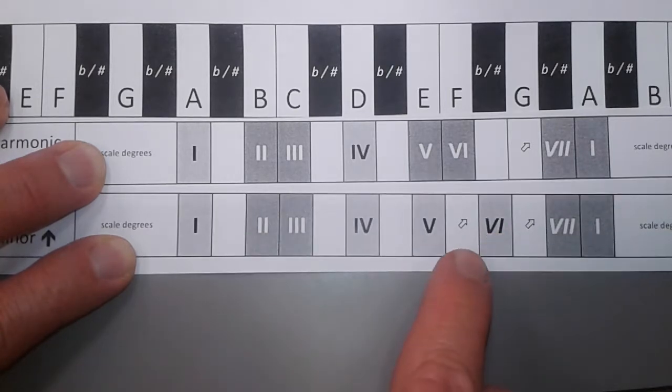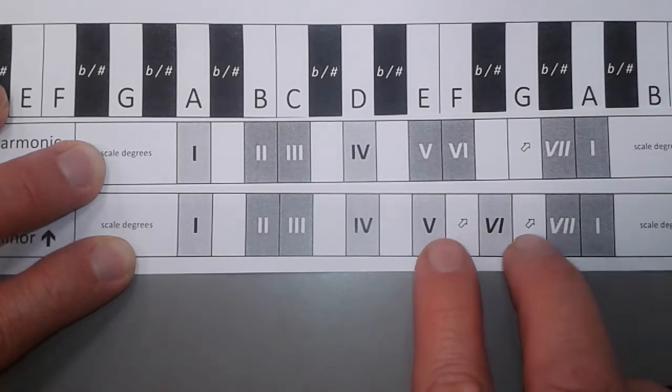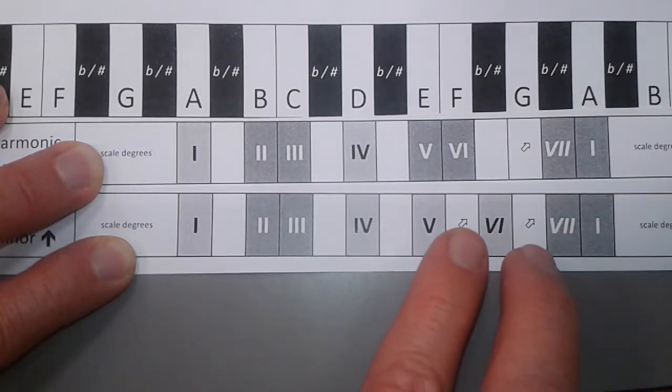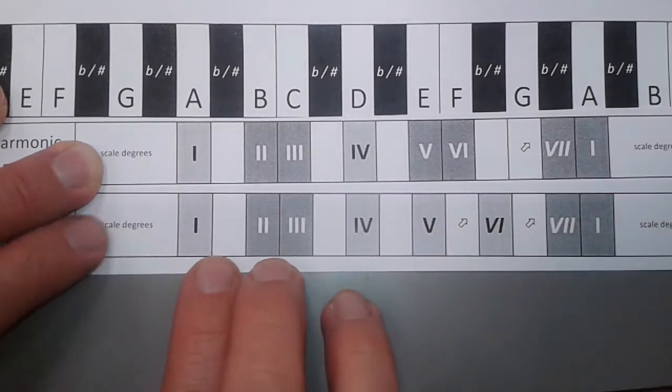That's the raised one as well. And, of course, those two on the way down are back to their original position. So going up, both of them are up, six and seven. Going down, both of them are down.